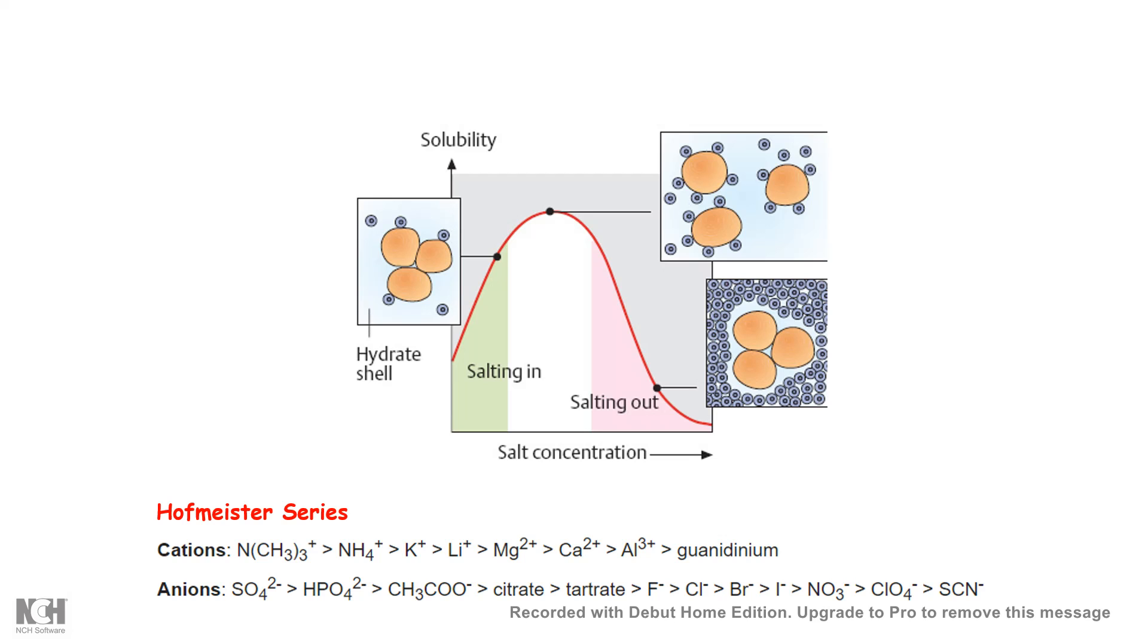And there is some series known as Hofmeister series, which actually tells us that using which type of salt counter ions, we can precipitate what type of proteins. And actually, this is a very crude method of protein separation because different protein has different solubility. And using different salt concentration, you can precipitate different proteins based on their properties. But that requires a prior information about the protein's ionic situation. Otherwise, it's impossible to know which range you need to precipitate the protein and separate it out. So that's why it's a very crude method as well.